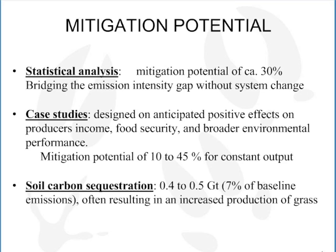The third approach we used to look at mitigation potential was through soil carbon sequestration, in a joint work with Colorado State University. In this assessment, we calculated that about half a gigaton of carbon can be sequestered in grassland through better management, and that represents about 7% of baseline emissions.